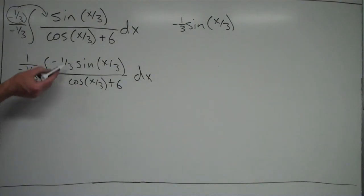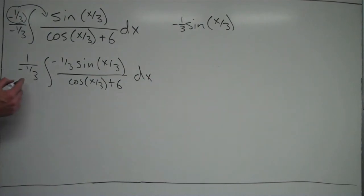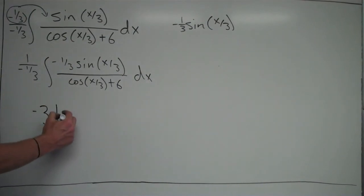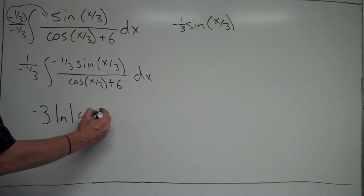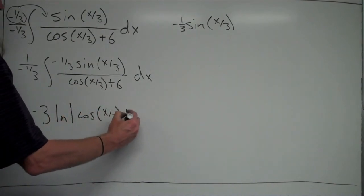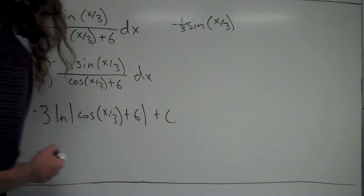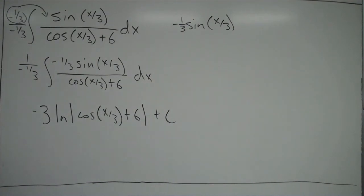Now I have it set up perfectly on the inside such that the derivative of the bottom equals the top. When I take the antiderivative, the constant goes along for the ride. I'd rather rewrite 1 divided by 1/3 as just 3, so this is the same as negative 3, times the natural log absolute value of the bottom, which is cosine(x/3) plus 6, plus C. Since cosine plus 6 is always positive, you probably don't even need the absolute value signs, but it still works out.